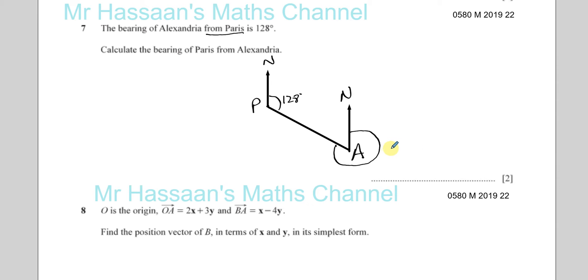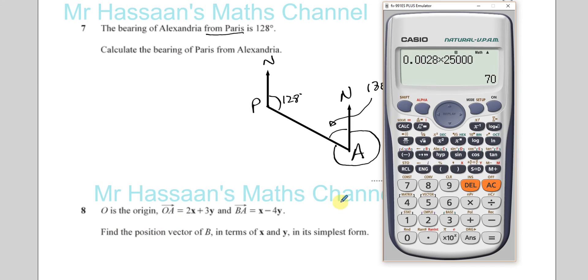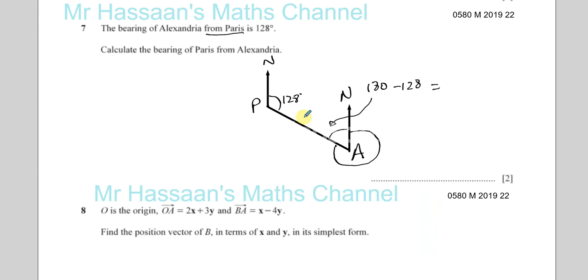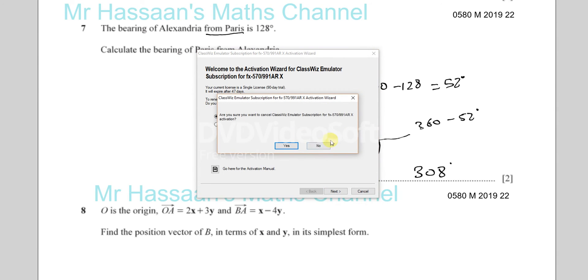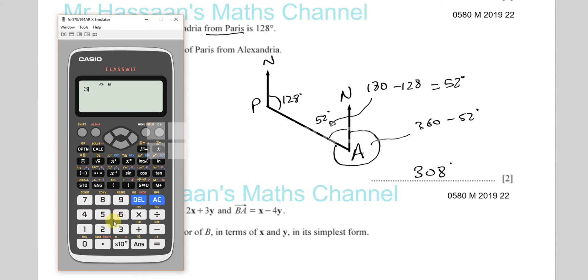We want to find this angle here. There's a couple of ways we could do it. I know that this is the north line and this is the north line. They are parallel. Therefore, these two angles here are corresponding. So this angle here is 180 minus 128. 128 take it away from 180, that's 52 degrees. So we know that angle is 52 degrees. Therefore the angle we need is 360 minus 52 degrees, which is going to be 308 degrees.